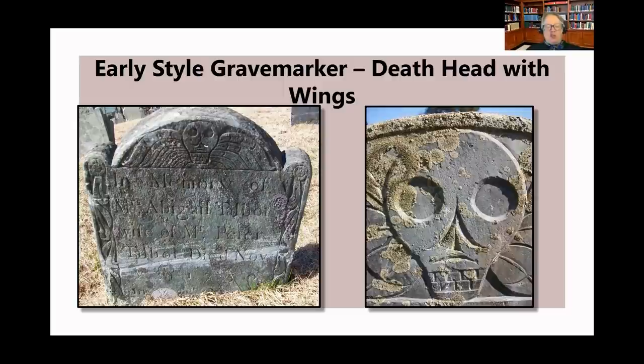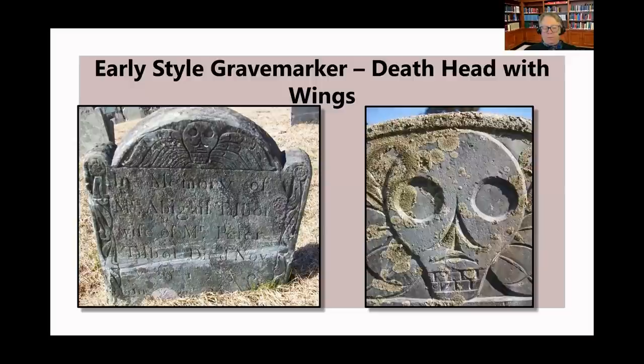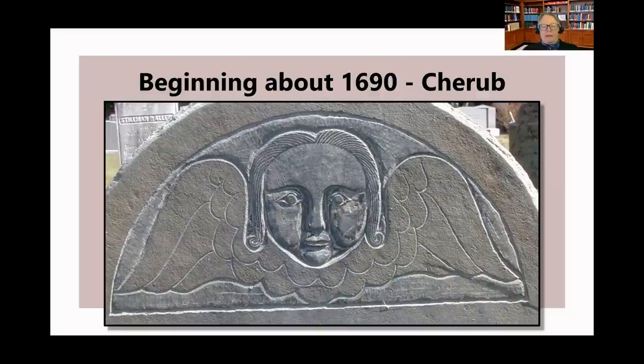The marker on the left shows some interesting features. The rounded portion at the top is called the tympanum, where the death's head is shown. The two knobs on either side of the tympanum are known as the shoulders. The tablet in the middle where the inscription is contains the written material, and on the sides there were borders. Beginning about 1690, the cherub face begins to appear on grave markers as the Puritan hold on views of death began to weaken somewhat.